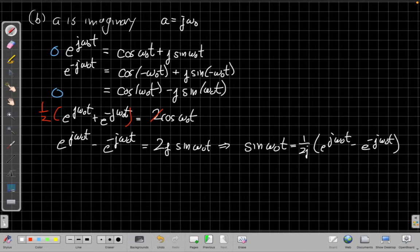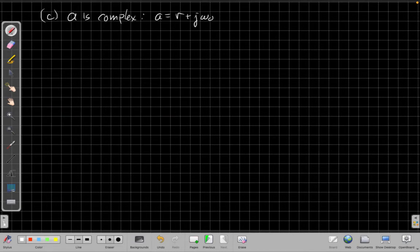And then the third case is when I have a as a complex number with a real and imaginary part. So let's see how that works out. So if I have a = r + jω₀, and I plug that into the exponential, I get C e^((r + jω₀)t).